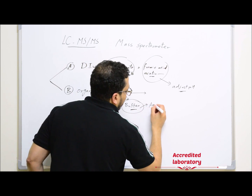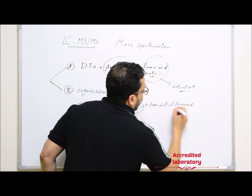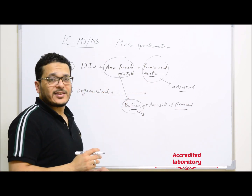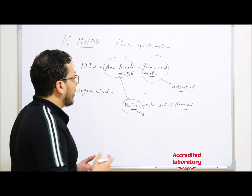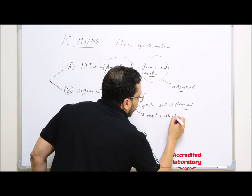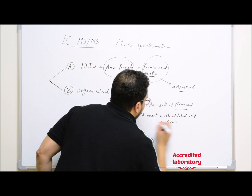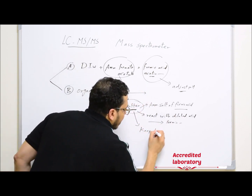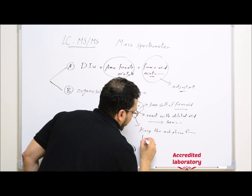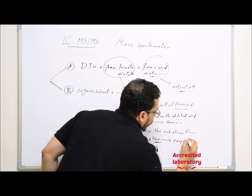Ammonium formate is a buffer — an ammonium salt formed from formic acid. It acts as a buffer because it can react with diluted acid to reform formic acid, keeping the mobile phase stable for a long time even with evaporation or any fungus effect. It is also important to note that ammonium formate has limited solubility in organic solvents such as acetonitrile, and dissolves only weakly in methanol, but is well dissolved in ionized water.